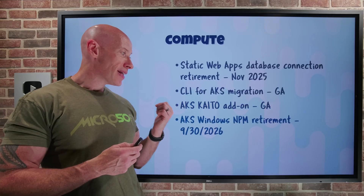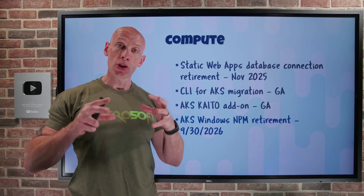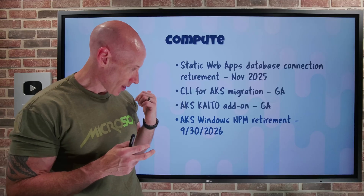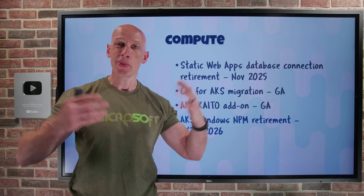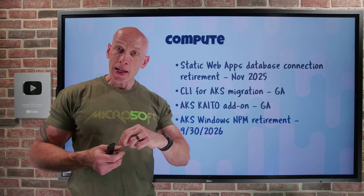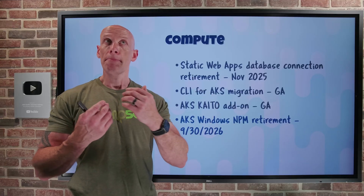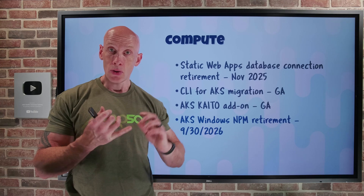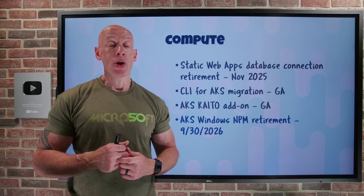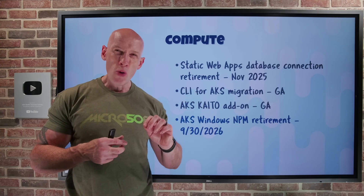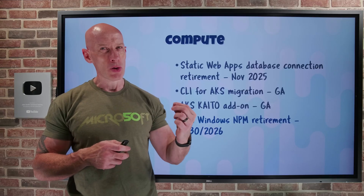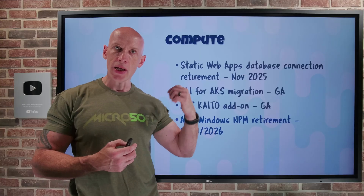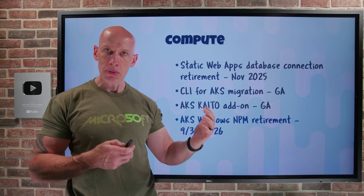For Azure Kubernetes Services, if you're using Windows node pools, the use of the network policy manager is being retired end of September 2026 — about a year's time. Depending on what functionality you're using will modify how you solve that going forward. Maybe you can use network security groups on the network, or maybe you want to use things like Project Calico, which is an open source Kubernetes networking solution with security and observability.